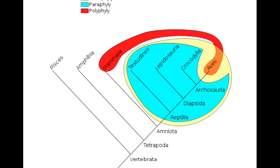Having four limbs is another shared derived characteristic, which helps us to say — sorry, fish — you are not tetrapods. You are not in this clade of tetrapods, because you do not have four limbs. Amniota: all of these organisms have an amniote egg, a specialized type of egg that can be produced on dry land. Amphibians have to lay their eggs in water, so sorry, amphibians — you do not have this shared derived characteristic of having an amniotic egg.